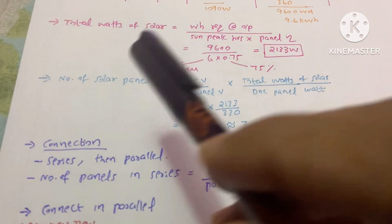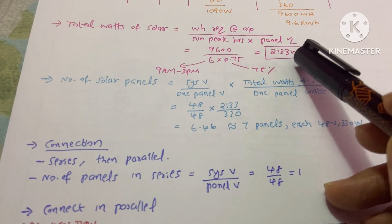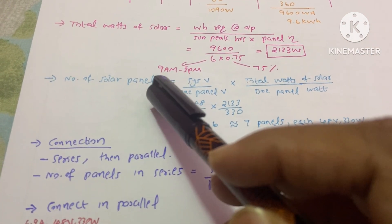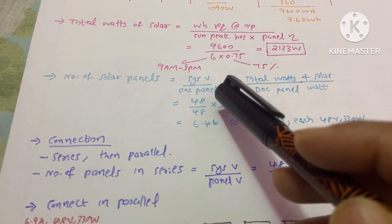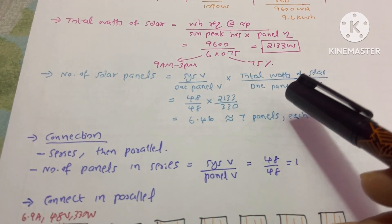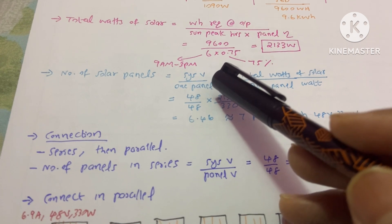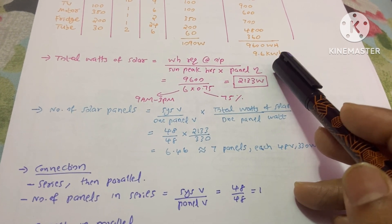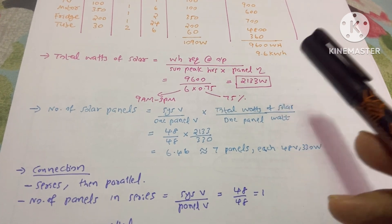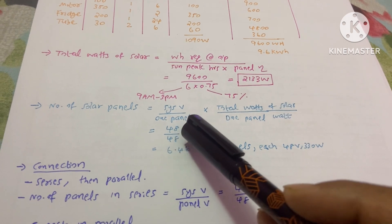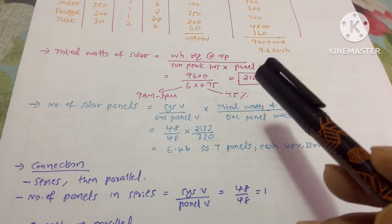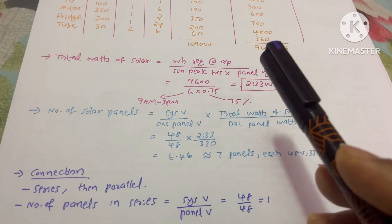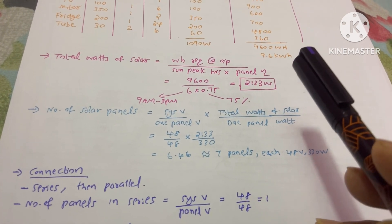The total watts of solar comes to 2133 watts. Now we calculate the number of solar panels — this is the combined wattage of all panels. The equation is: (system voltage / one panel voltage) multiplied by (total watts of solar / one panel watts). I take system voltage as 48V because our kWh is 9.6. If your system kWh is more than 5, use a 48V system. If less than 1.5 kWh, 12V is enough. If between 1.5 and 5 kWh, use 24V.